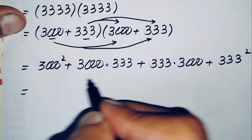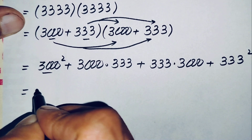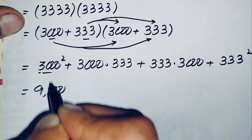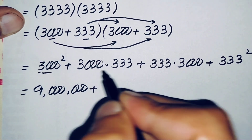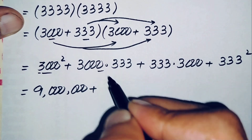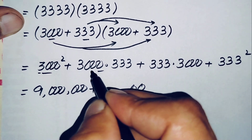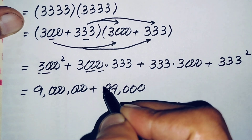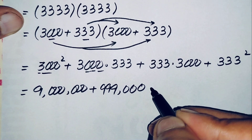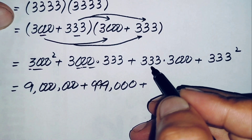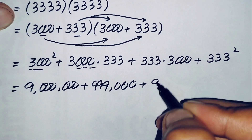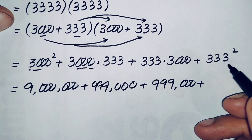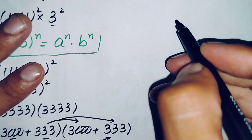Now we find the value of each term. 3,000 squared equals 9,000,000, since the square of 3 is 9 and the three zeros double to six zeros. 3,000 times 333: 333 times 3 is 999, so 3,000 times 333 equals 999,000. Similarly, 333 times 3,000 also equals 999,000.